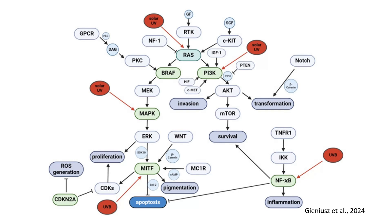UVB radiation directly activates this inflammatory pathway, which contributes to melanoma progression. TNFR1 and IKK are key mediators here. Notice how solar UV is marked as a key driver throughout this diagram — it directly activates RAS, NFKB, and pathways related to MITF and CDKN2A. These are the mechanisms through which UV exposure induces melanoma. At the bottom left, you can see the role of CDKN2A in ROS generation and cyclin-dependent kinase (CDK) regulation, contributing to oxidative stress and uncontrolled cell division.